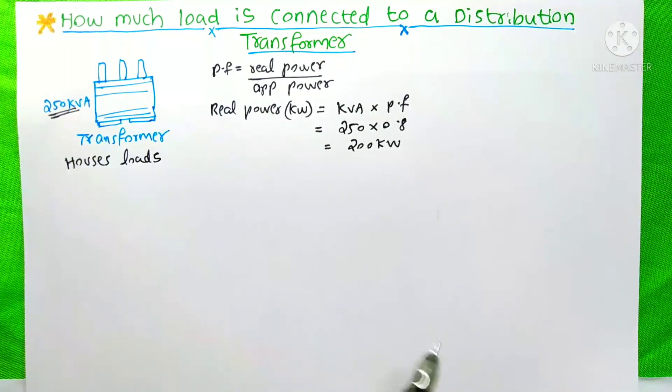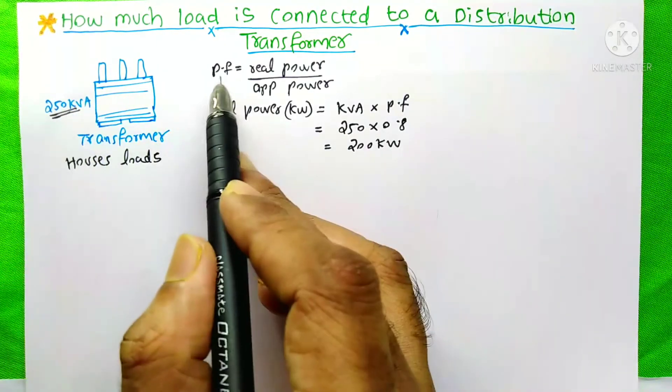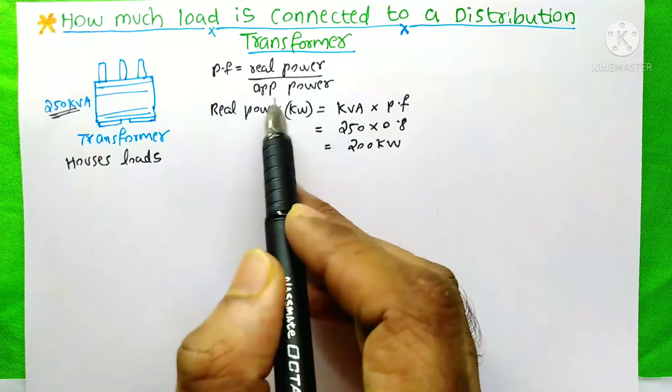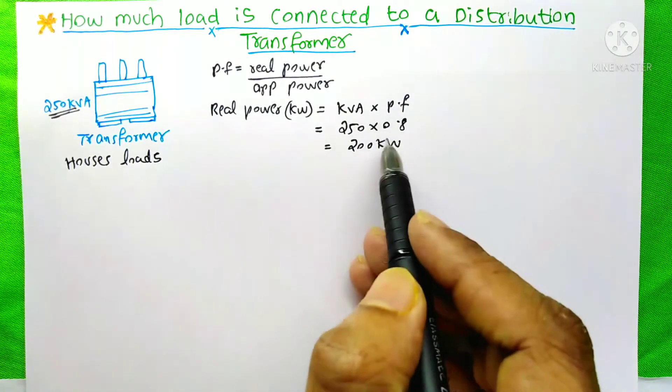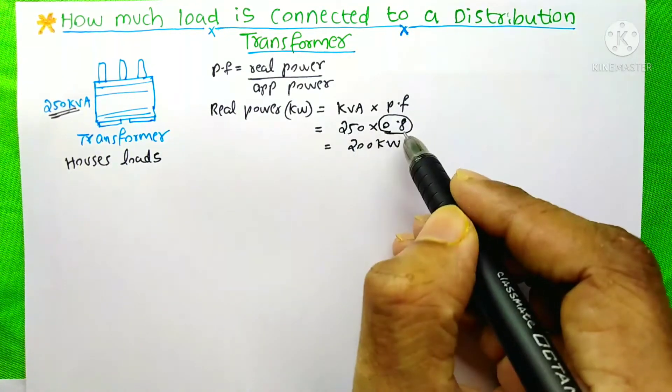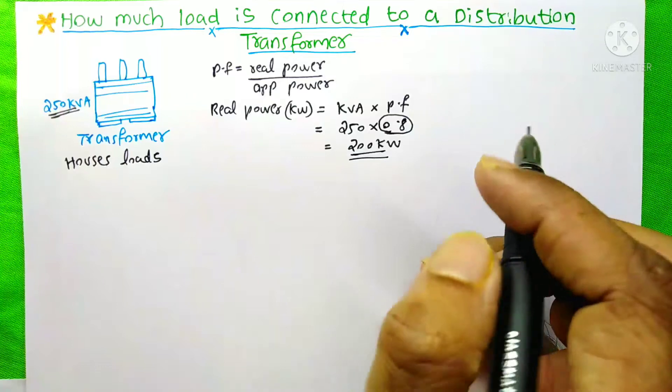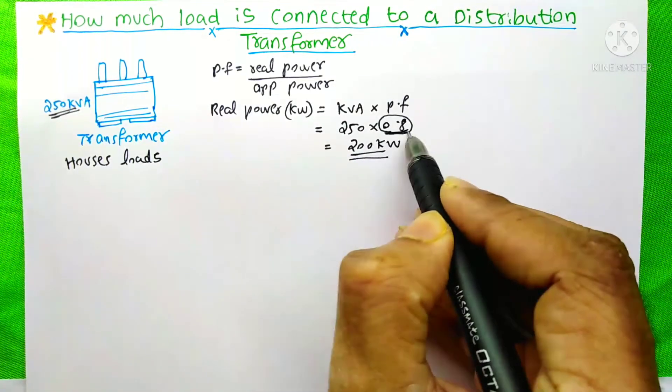House loads are in kilowatt, so we need to first find the kW of this 250 kVA. The power factor equation is real power by apparent power. Real power is kilowatt, equal to kVA times power factor. Here the power factor is 0.8, so 250 x 0.8 is 200 kW. That means 250 kVA is equivalent to 200 kW if the power factor is 0.8.